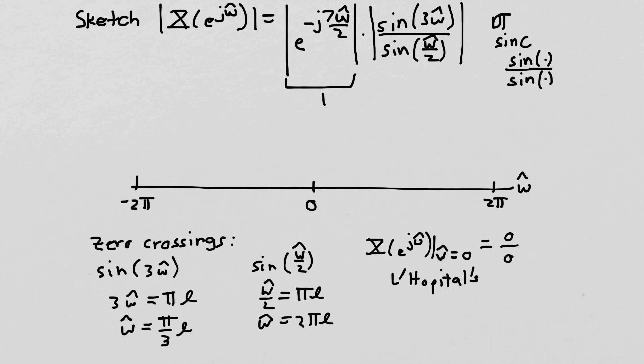But another way is simply to remember that X of e to the j omega hat, when omega hat equals zero, is just equal to the sum of x of n over all n. That's because normally the Fourier transform is x of n times e to the minus j omega hat n. But when omega hat is zero, that just becomes one, and we're left with this expression. So then it's just the sum of the values of the signal. That's easy to calculate, because we know we only have six non-zero points in the signal. So in our case, this is just going to be equal to six. So we already know a few values here. It's equal to six at minus two pi, plus two pi, and zero, and it repeats outside that.